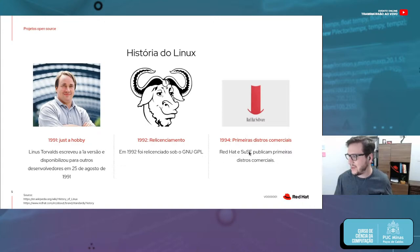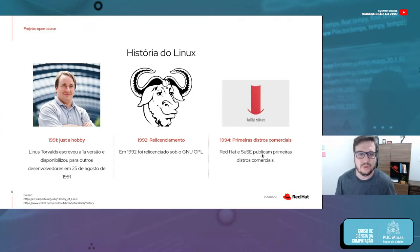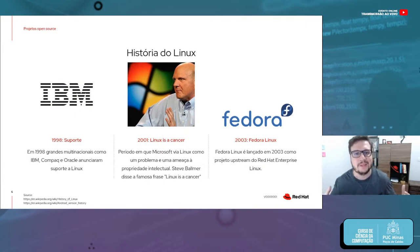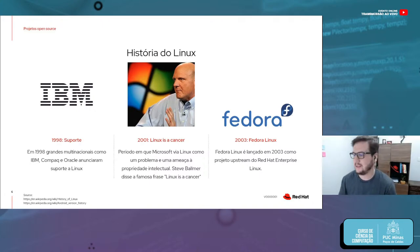A partir de 1994, começamos a ter as primeiras distribuições comerciais. Esse é o primeiro logo da Red Hat. Em 1994 surgiram o Red Hat e o SUSE. A partir de 1998, empresas maiores como IBM, Compaq e Oracle começaram a dar suporte ao Linux em seus servidores e clientes.